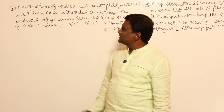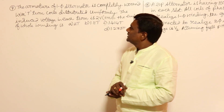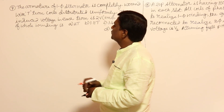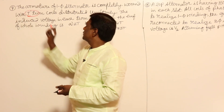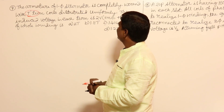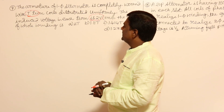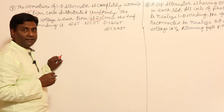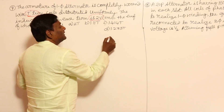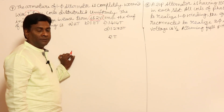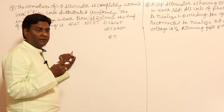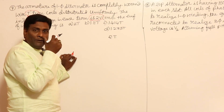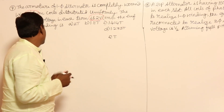In this session, let us solve two problems from a gate exam on no-load conditions of an alternator. The armature of a single-phase alternator is completely wound with t-turn coils distributed uniformly. The induced voltage in each turn is 2 volts. If we consider t turns, directly 2×t would be wrong. Since no short pitching angle is mentioned, the pitch factor will be unity.